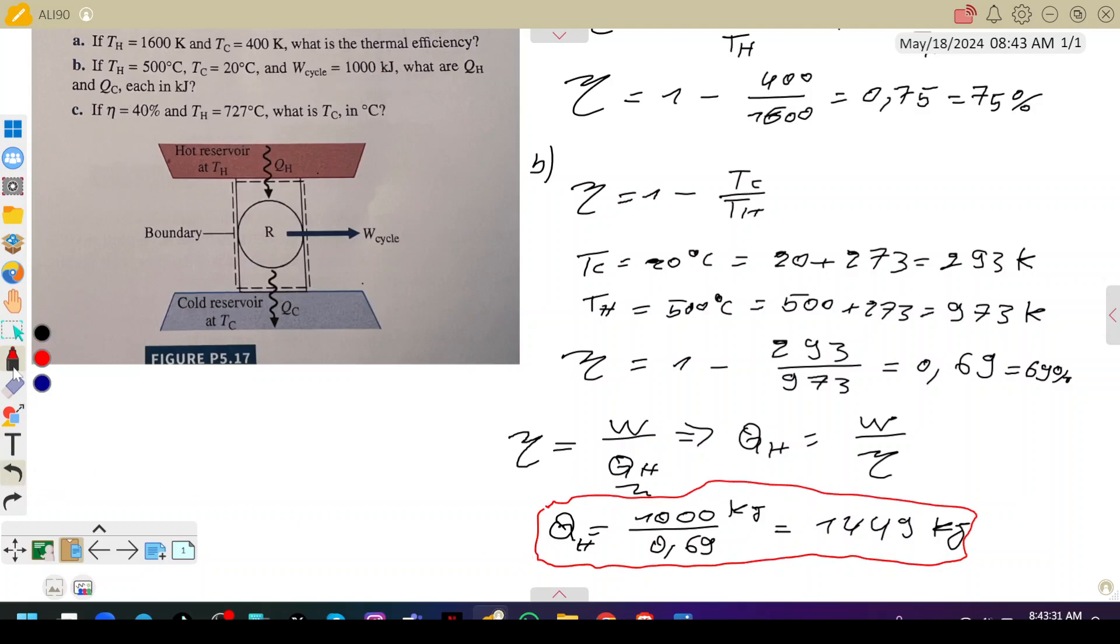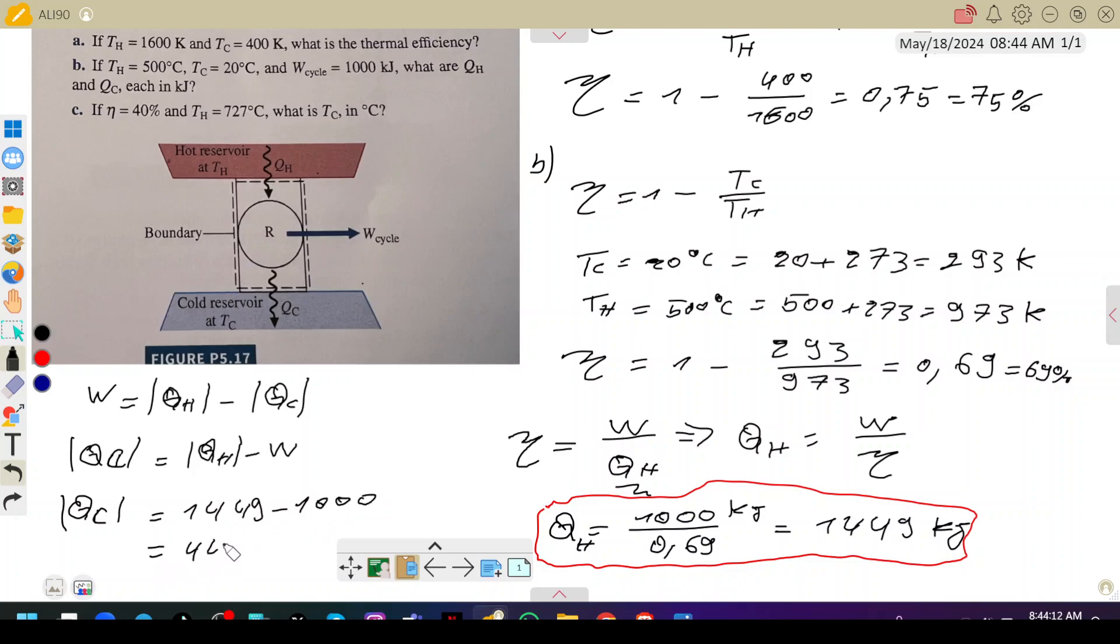Now for Qc, we have W equals Qh minus Qc. So Qc would be equal to Qh minus W. Qc here would be equal to 1449 minus 1000, so Qc equals 449 kilojoules. That's what is lost to the surroundings as thermal energy.